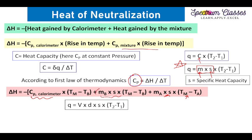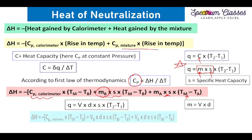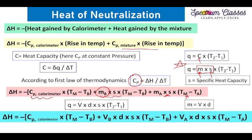If we have not taken the mass of the substance directly, we can convert using the relationship mass = volume × density. Here we use the density of acid and base as the density of water, so the equation can be elaborated using volume × density for the parameters we know.